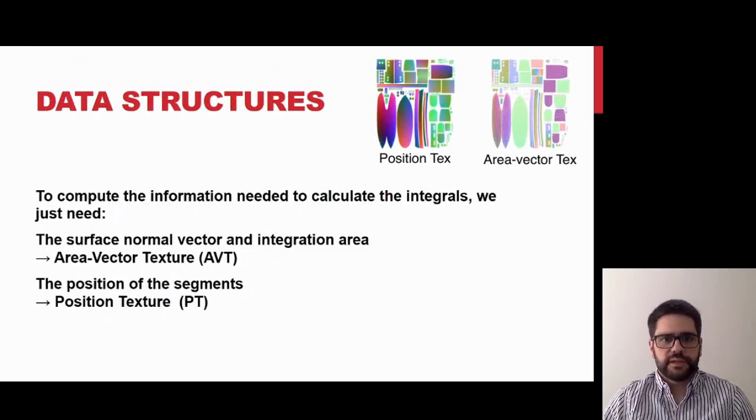To compute these integrals, we need the surface normal vector and integration segment areas. This data is stored in one of the two pre-computed textures, called area vector texture. Also, we need the position of the integration segments, which are stored in the second pre-computed texture, called position texture.